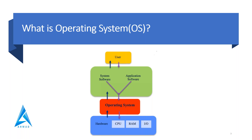If you can see in the figure, there is a user, then system software and application software, then the operating system, then hardware — in hardware we have CPU, RAM, and IO. Whatever the user is doing through the keyboard or through whatever device they have, the user is sending the command to the application, then through to the operating system, and then from the operating system to the hardware. From hardware it will process and execute, and then the final result will come back to the operating system and then to the user. This is the way work happens on the server.